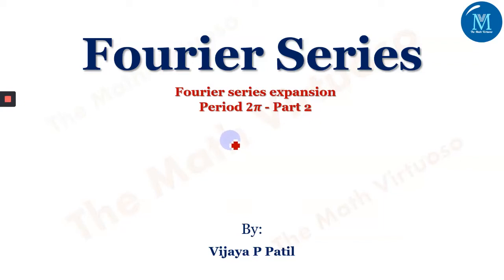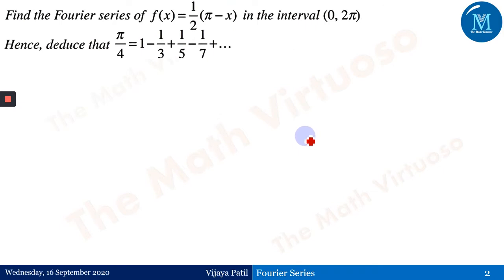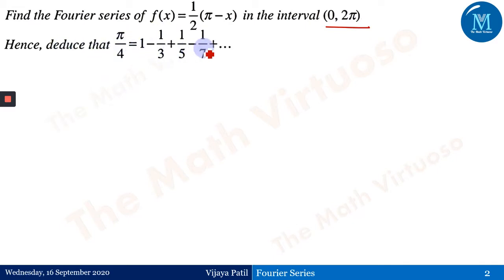Hello everyone. In continuation with the Fourier series, we'll be going ahead with the Fourier series expansion. We will be dealing with period 2π type of questions, and this is Part 2. The question says: find the Fourier series of f(x) = ½(π - x) in the interval 0 to 2π, and hence deduce that π/4 = 1 - 1/3 + 1/5 - 1/7 + ... These are the two parts I need to address.